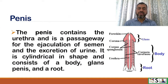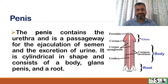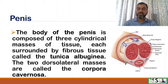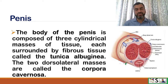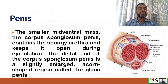The penis contains the urethra, serving as a pathway for both ejaculation of semen and excretion of urine. It is cylindrical in shape and consists of a body, glans penis, and root. The body of the penis is composed of three cylindrical masses of tissue, each surrounded by a fibrous tissue called the tunica albuginea. The two dorsolateral masses are called the corpora cavernosa, and the smaller mid-ventral mass is the corpus spongiosum penis.